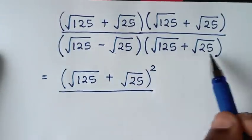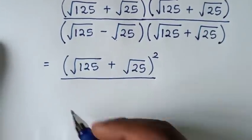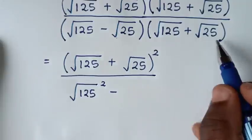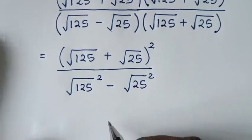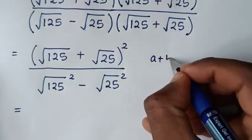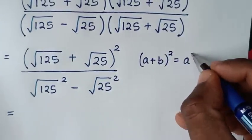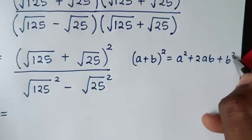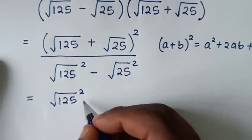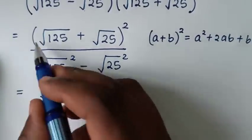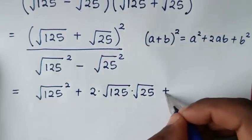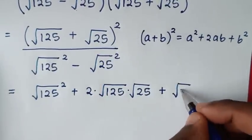The denominator is in the form (A - B)(A + B) = A² - B², giving square root of 125 squared minus square root of 25 squared. We expand the numerator using (a + b)² = a² + 2ab + b²: square root of 125 squared, plus 2 times square root of 125 times square root of 25, plus square root of 25 squared.